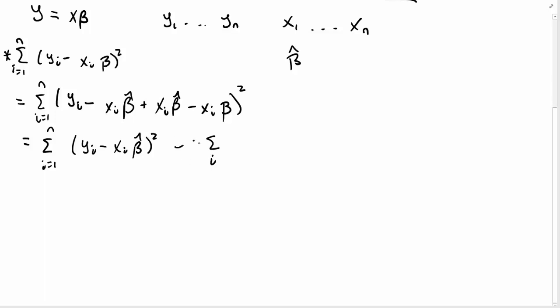Minus twice summation i equal 1 to n, yi minus xi beta hat, times xi beta hat minus xi beta, plus the summation xi beta hat minus xi beta squared.